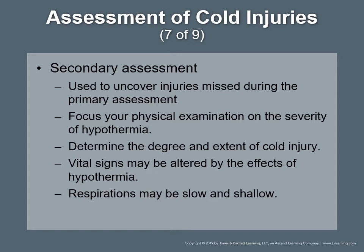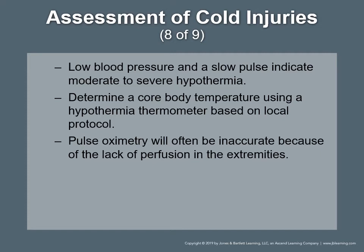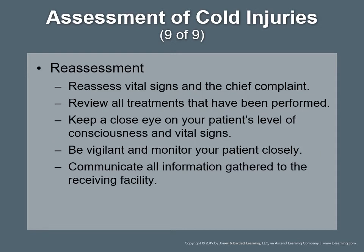Secondary assessment uncovers injuries missed during the primary assessment. Focus the physical examination on the severity of hypothermia and determine the degree and extent of cold injury. Examine skin temperature, texture, and turgor carefully. Vital signs may be altered by hypothermia — respirations may be slow and shallow, and low blood pressure with a slow pulse indicates moderate to severe hypothermia. Determine core body temperature using a hypothermia thermometer per local protocol. Pulse oximetry will often be inaccurate due to lack of perfusion in the extremities. Reassess vital signs, review all treatments, and communicate all information to the receiving facility.